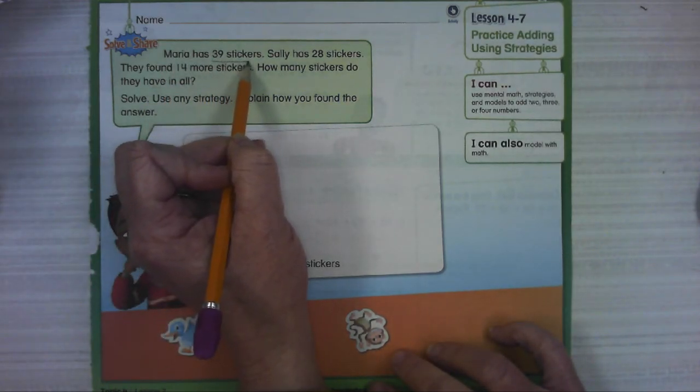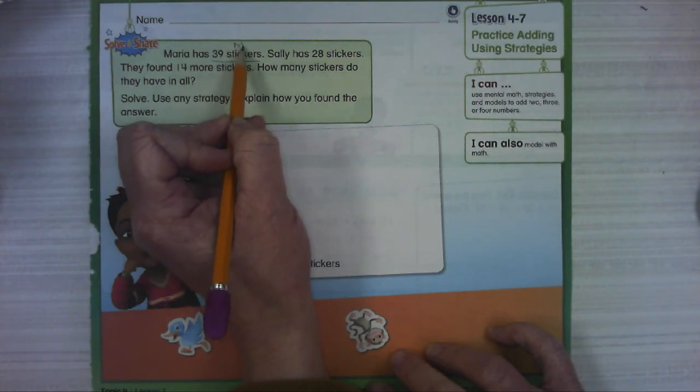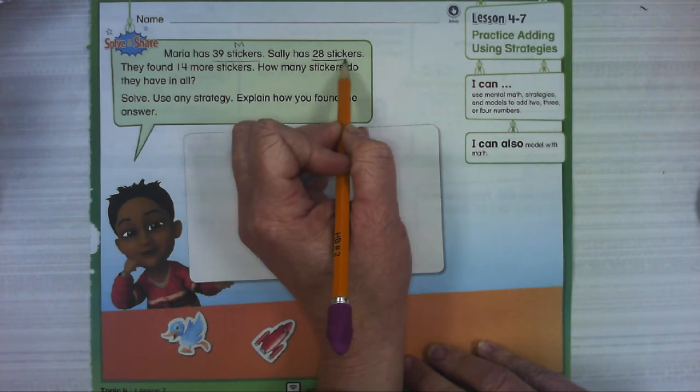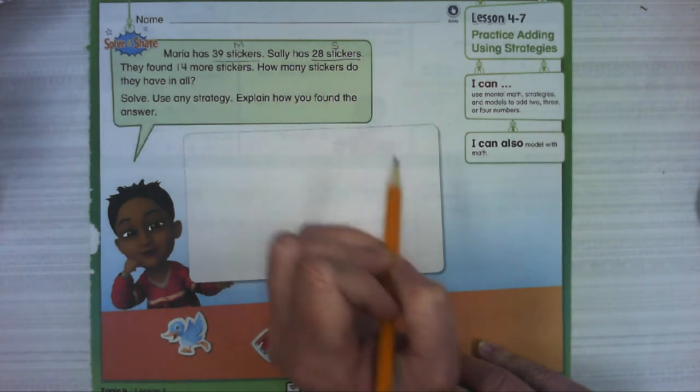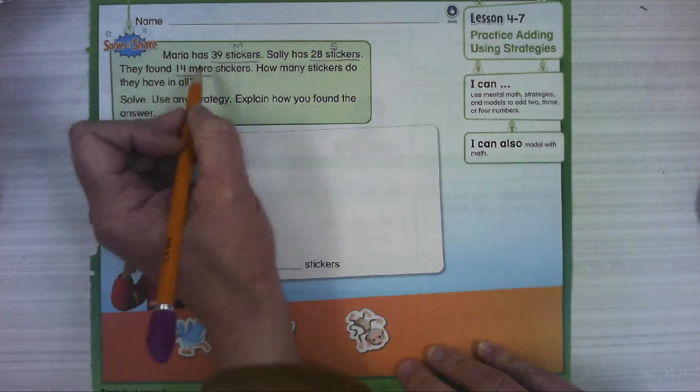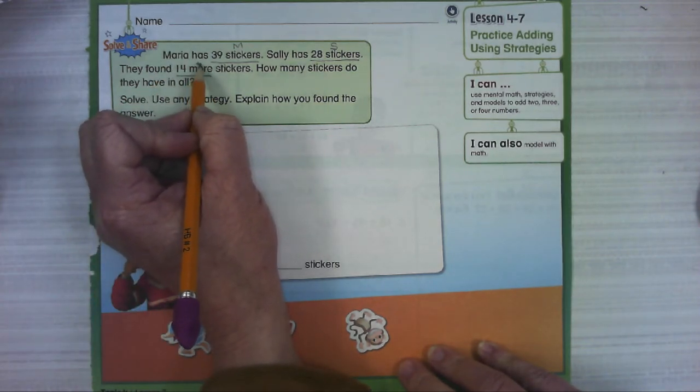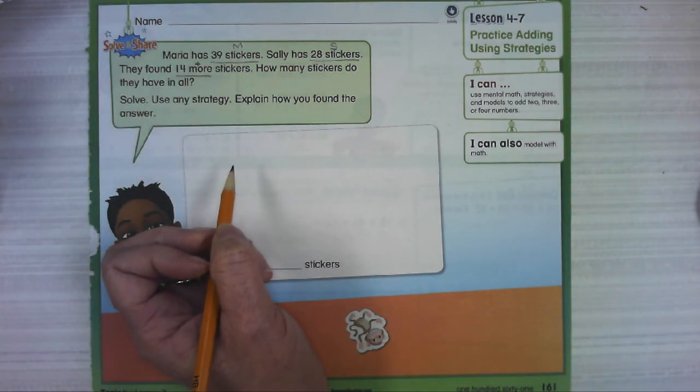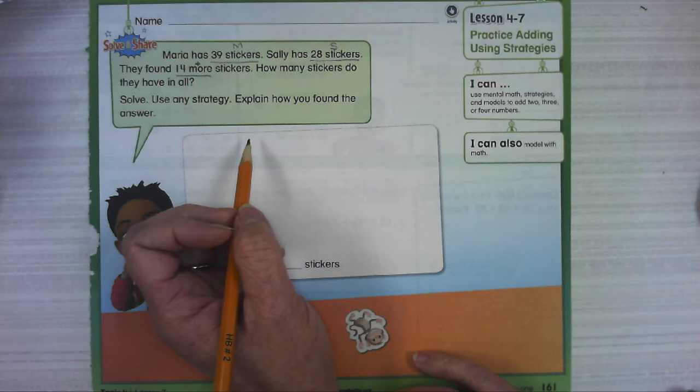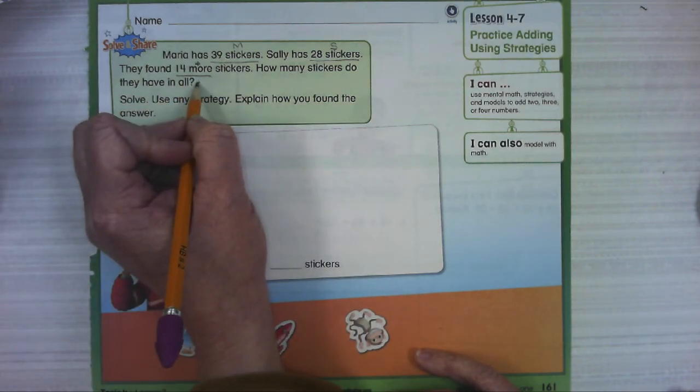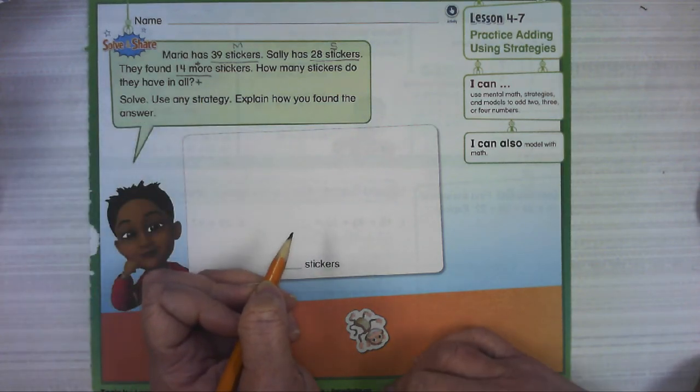What do we know about the stickers? We know that Maria has 39 stickers, put an M for Maria. Sally has 28 stickers. Then they found 14 more stickers. More usually means getting bigger, like adding. How many stickers do they have in all? That's a combining problem. We're putting all those stickers together. Combining is addition.